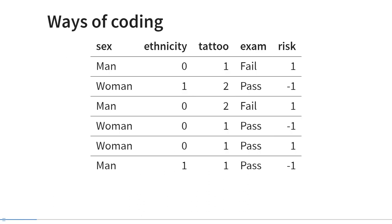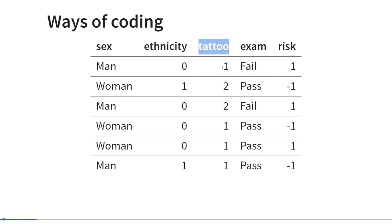There are different ways to code differences between two groups in your dataset. This table shows five different variables coded in different ways. For example, the variable sex has been coded with the words man or woman. The variable ethnicity has been coded zero and one, where zero perhaps represents Dutch and one represents foreign. Having a tattoo or not has been coded one and two, and exam has been graded with words: fail, pass, etc.